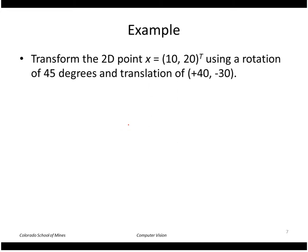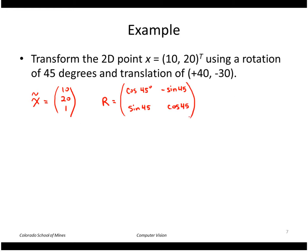We'll do this in homogeneous coordinates, so we'll write vector X in homogeneous coordinates as 10, 20, and 1. We need to come up with a rotation matrix given by cosine 45 degrees, minus sine 45 degrees, sine 45 degrees, and cosine 45 degrees. Numerically that is square root of 2 over 2, so 0.707, minus 0.707, 0.707, 0.707.